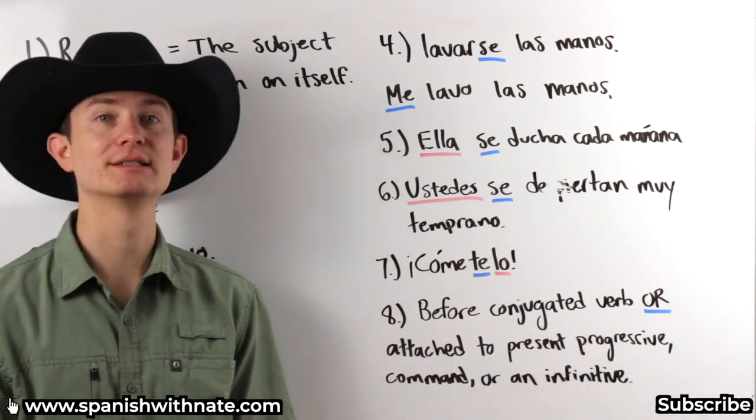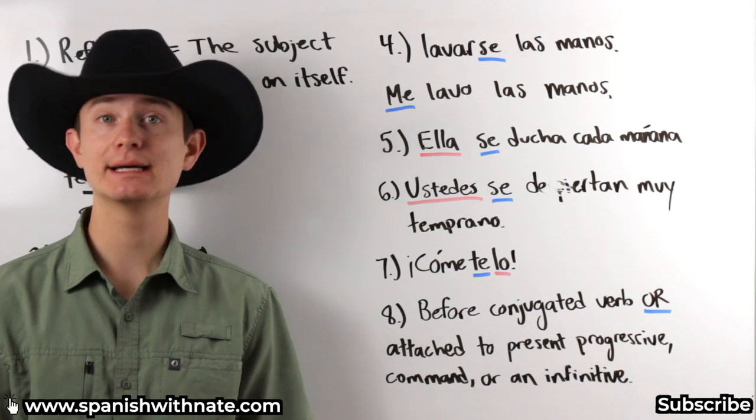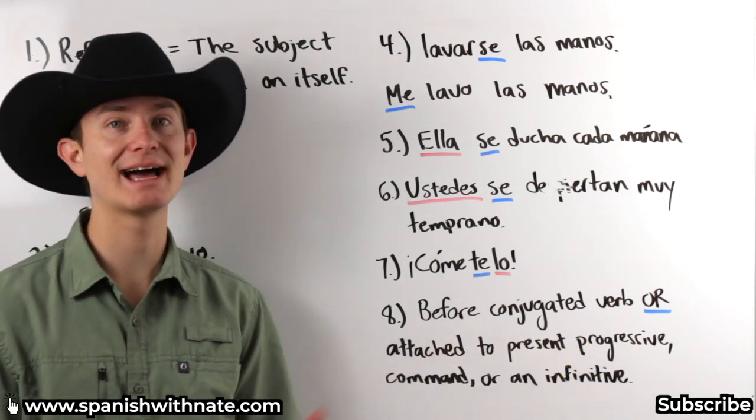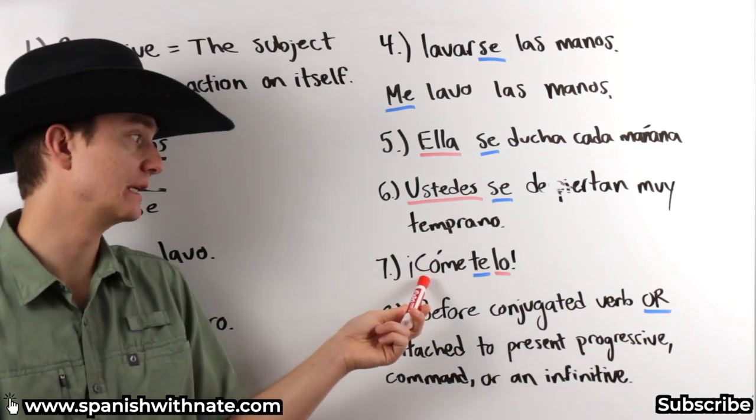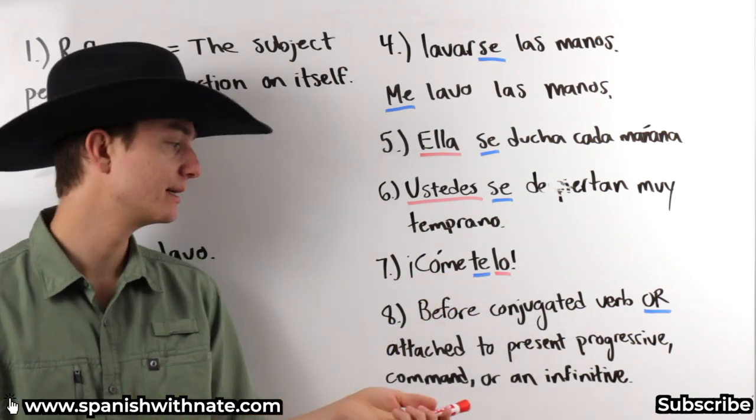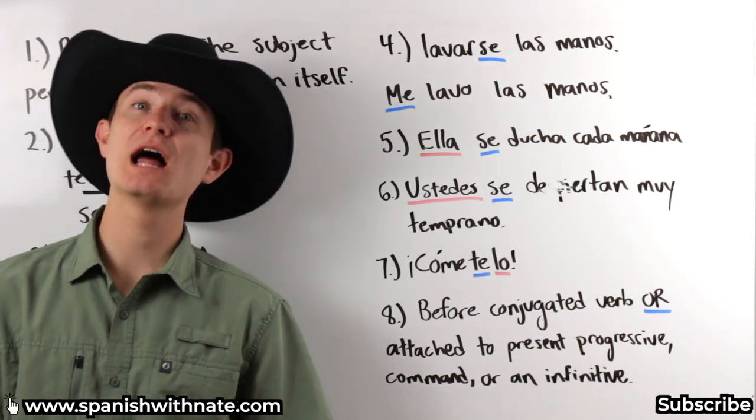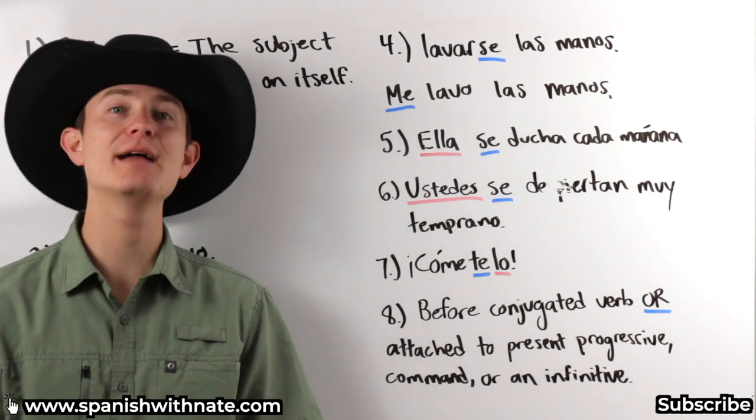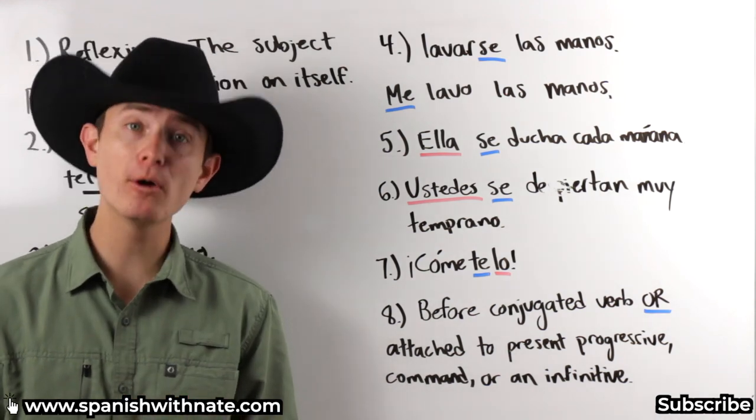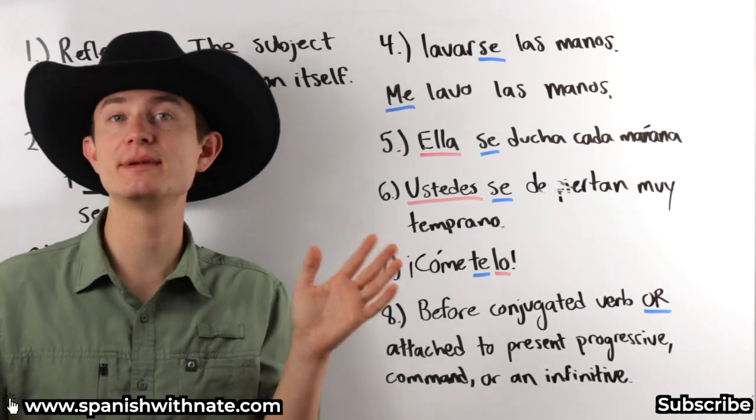Or, we can attach it to the present progressive. For example, I am washing myself. Me estoy lavando. Or, estoy lavandome. Lavandome. That's the present progressive. We can add that onto the end, that reflexive pronoun. We can also do the command, which we're seeing here. Cometelo. In fact, with the reflexive pronoun, you wouldn't say, te comelo. It would be, cometelo. So, for the commands, it has to be attached onto the end here. And finally, an infinitive verb. For example, I am going to shower. Voy a ducharme. Like we talked about. Voy a ducharme. I am going to shower. I can also say, me voy a duchar. Because, me is going before the conjugated verb, voy. So, you have two options. It's preference. The meaning is still the exact same. Me voy a duchar. Voy a ducharme. They both mean the exact same thing.